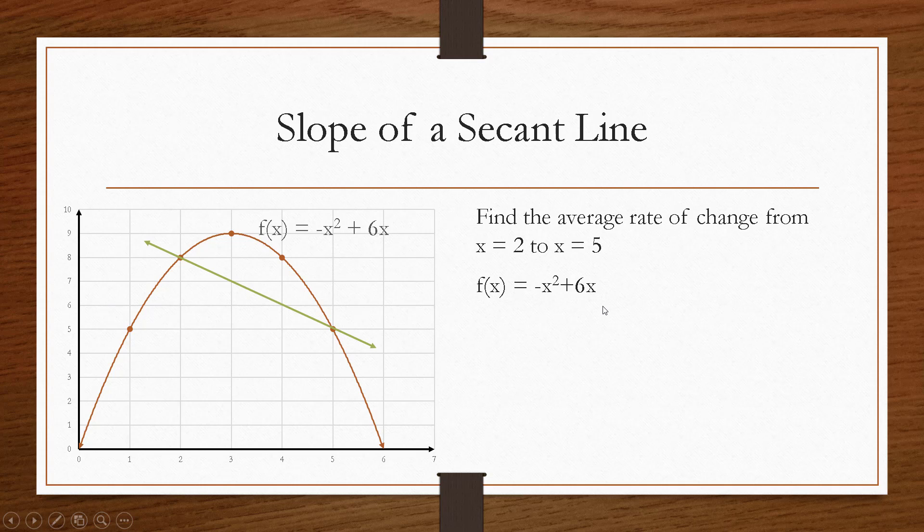What I would want to do is find the y value when x is 2 and the y value when x is 5. Well, I can do that by plugging those x values into this function. So f of 2 would be negative 2 squared plus 6 times 2, which is negative 4 plus 12, which is 8. So our first point is located at 2, 8. Similarly, the second point would be located at 5, 5, because when I plug in 5 for x, I get 5 for y. Purely coincidental.